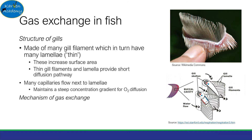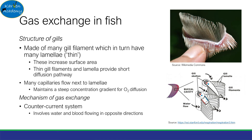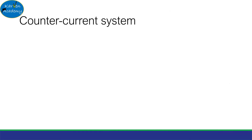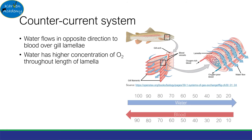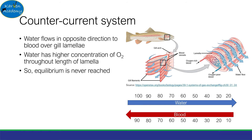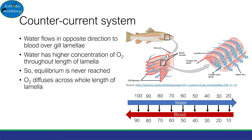But how do fish absorb oxygen from water? This is answered by the counter-current system. Counter means opposite, which makes sense because water and blood flow in opposite directions. In the counter-current system, water flows in the opposite direction to blood over the gill lamellae. This means water can have a high concentration of oxygen throughout the whole length of the lamella. The values in blood are always smaller than in water, so equilibrium is never reached. Ultimately, oxygen can diffuse across the whole length of the gill.